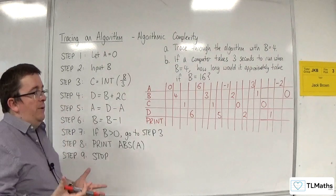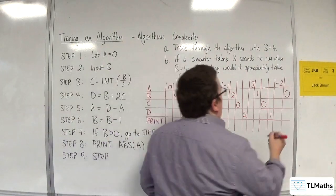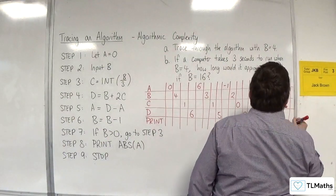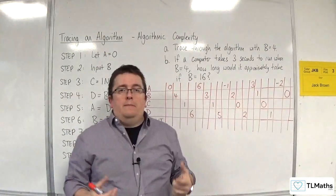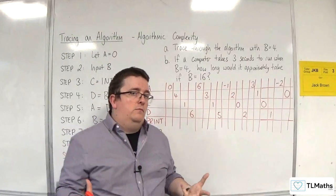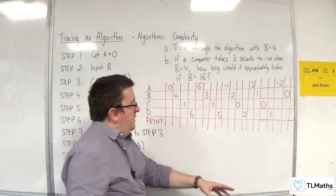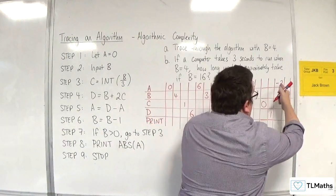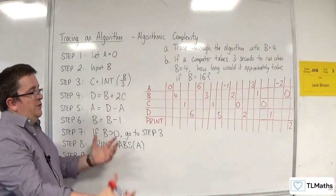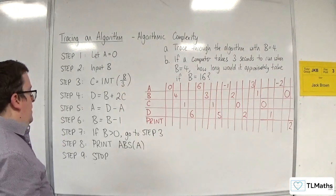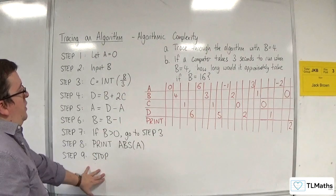Print the absolute value of a. So, the absolute value of a, what that means is, it's just going to take whatever a is, and make sure the output is positive, or greater than equal to 0. So, the absolute value of minus 2 is just 2. It's the modulus of 2, modulus of minus 2. So, that's our printing, and then we stop.